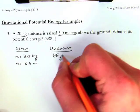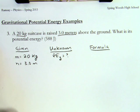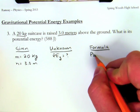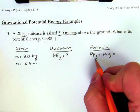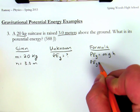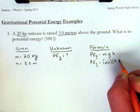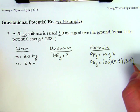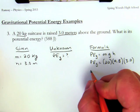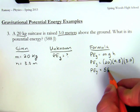In order to solve for the unknown, my formula is potential energy due to gravity equals mgh - mass times gravity times height. As I make my substitution, the mass is 20 kilograms, gravitational acceleration is always 9.8 here on Earth, and the height is 3 meters. As I multiply these together, I'm left with 20 times 9.8 times 3, which is 588 joules of potential energy.